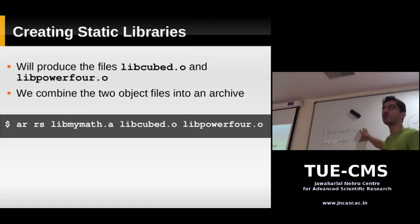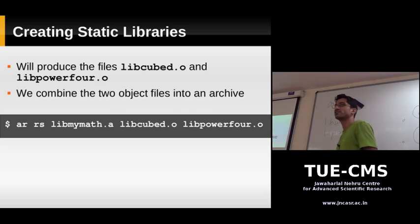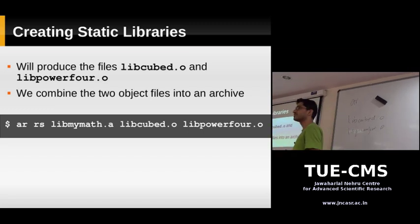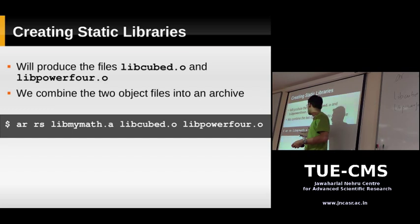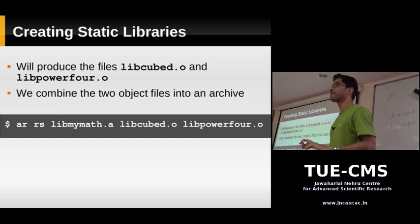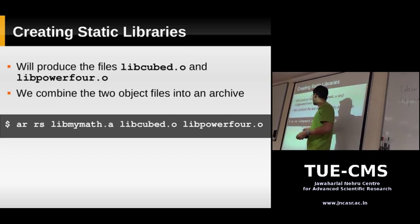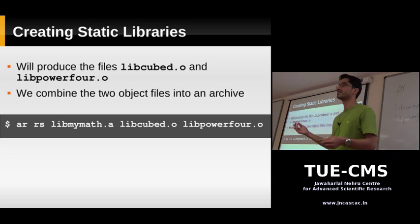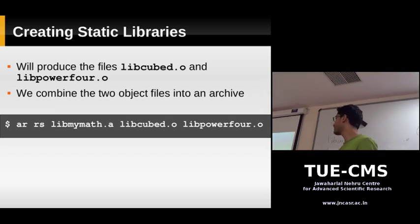Now we want to combine these two object files into one single static library. For that we use a command called AR — which stands for archive. The AR command is similar to the tar command: it takes many files and puts them together into a single file. AR takes libcube.o and libpower4.o and puts them together in an archive called libmymath.a. Generally, when you put object files into an archive, the conventional name ends with .a. The RS options to AR: the R option tells AR to add the files to the archive, and the S option tells it to produce an index, which makes linking faster.